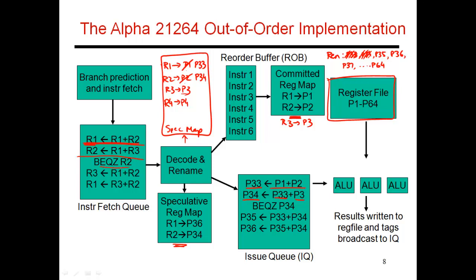The third instruction is a branch which does not need a destination register. It just reads the value in R2, which the speculative map table says can be found in P34, so it gets input operand from P34. The next instruction needs values in R1 and R2, now in P33 and P34, and puts its destination in the next free register P35. The map table is updated to say R3 can now be found in P35.